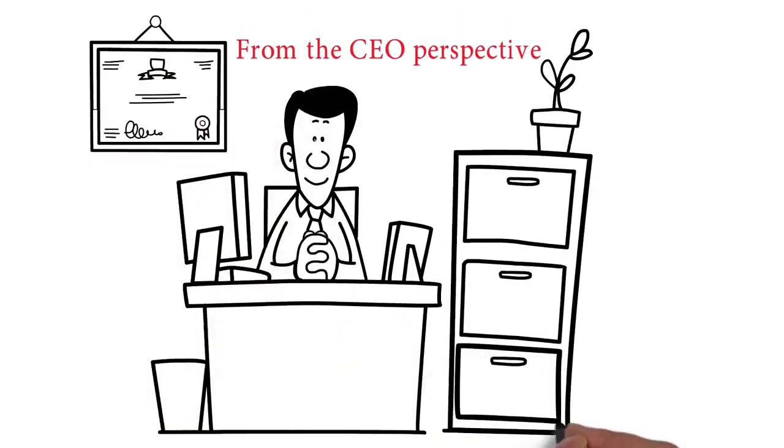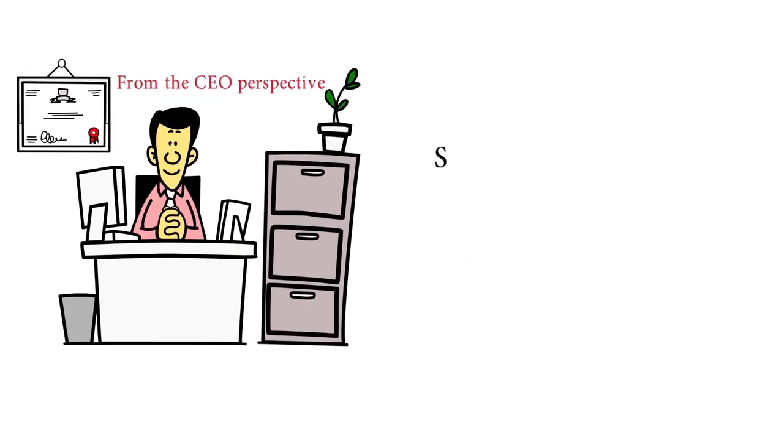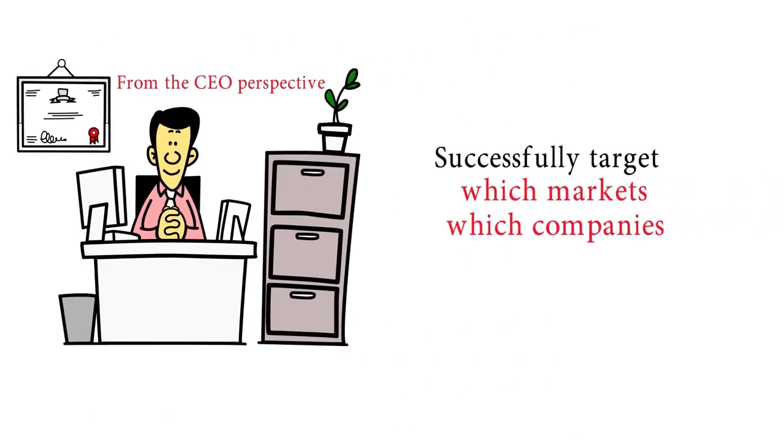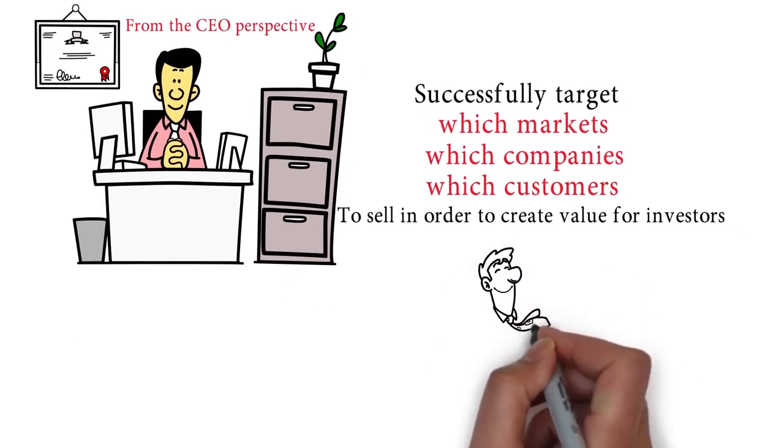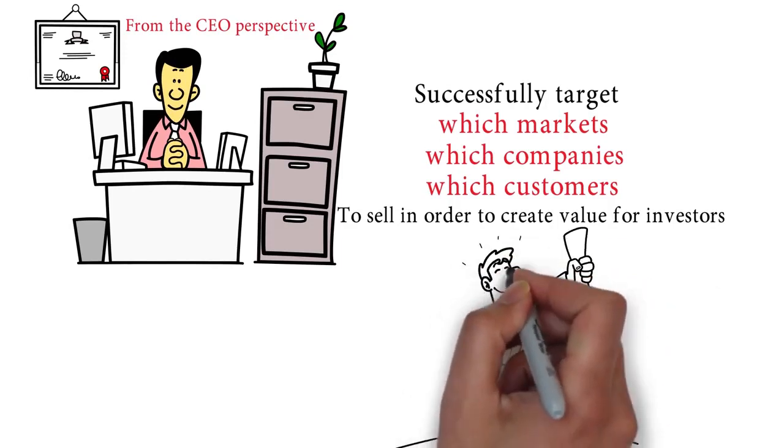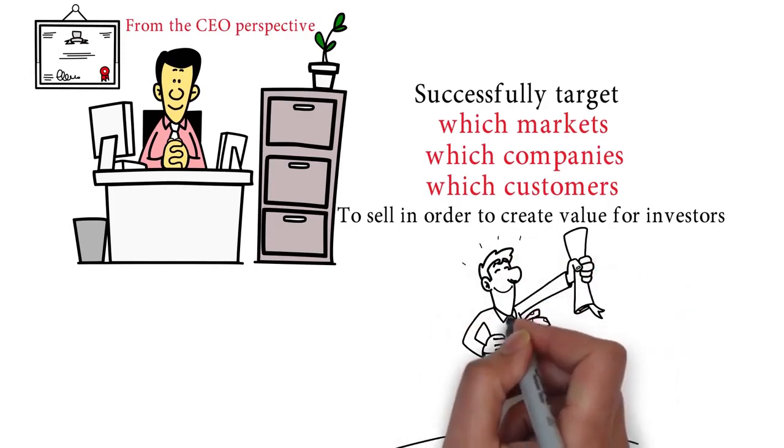Let's take a top-down look at sales execution. From the CEO perspective, sales execution means successfully targeting which markets, which companies, and which customers to sell in order to create value for investors. In that way, sales execution is simply about ensuring the successful pursuit and achievement of the sales strategy.